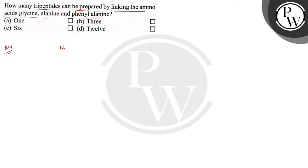Number of amino acids are three. You have to prepare a tripeptide, so n equals 3 for tripeptide. This 'tri' represents n, that is the number of amino acids.